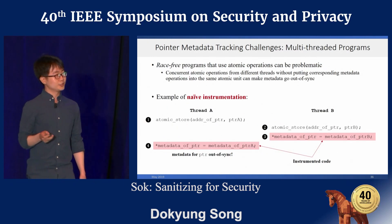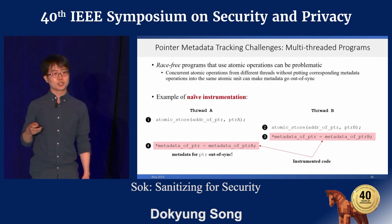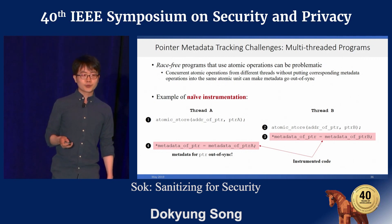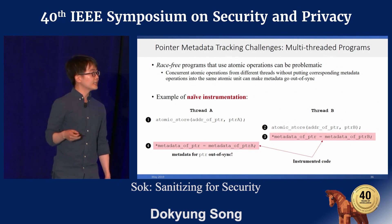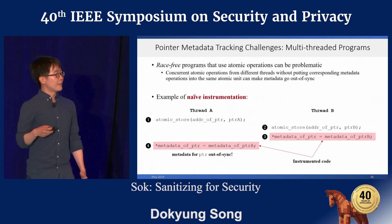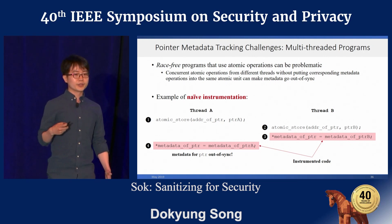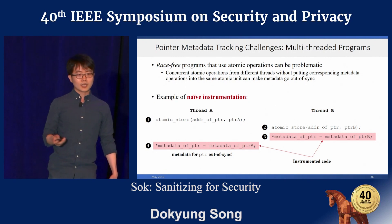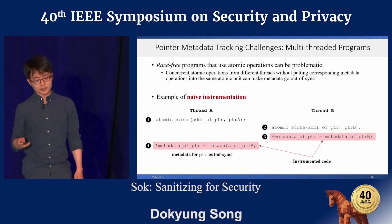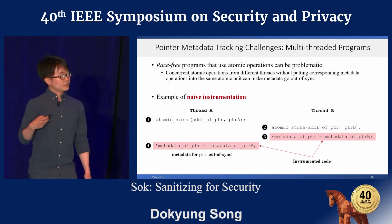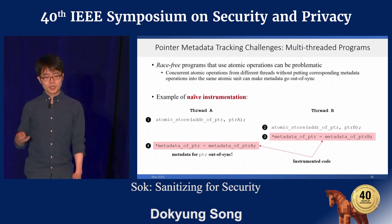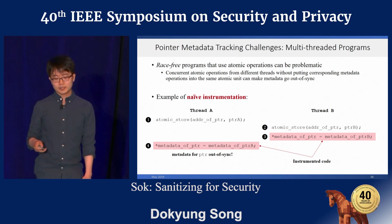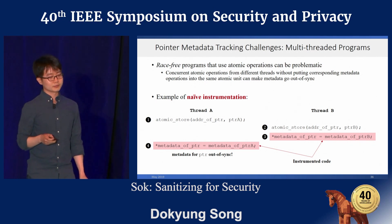Another challenge is maintaining thread safety if the original program is multithreaded. For example, if two threads are atomically updating the same pointer value concurrently, and if the corresponding metadata update is not within the same atomic unit, metadata can go out of sync. One may be able to address this by introducing locks for every memory location accessed atomically, but no tool actually addresses this problem yet.